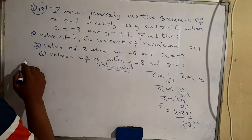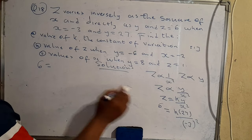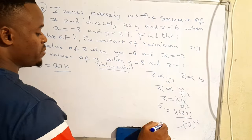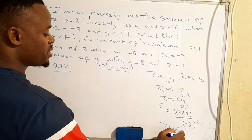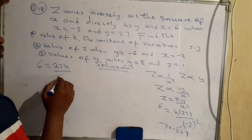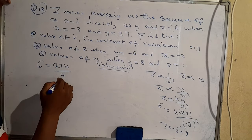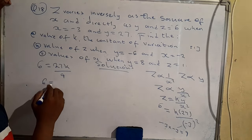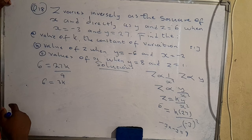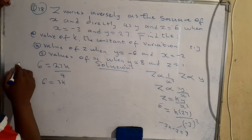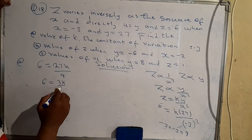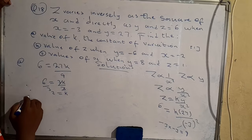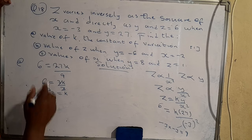This gives us 6 = 27k/9. Since 9 goes into 27 three times, we simplify to 6 = 3k. To find k, we divide both sides by 3, giving us k = 2. So the constant of variation k has been determined as 2.